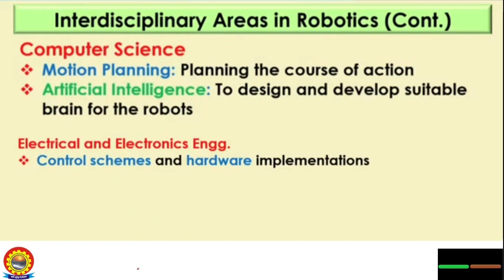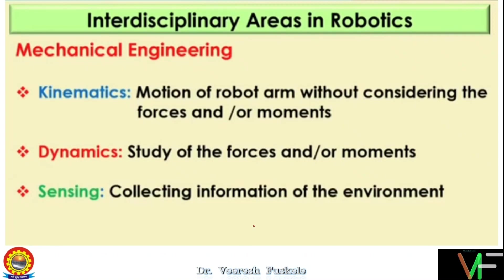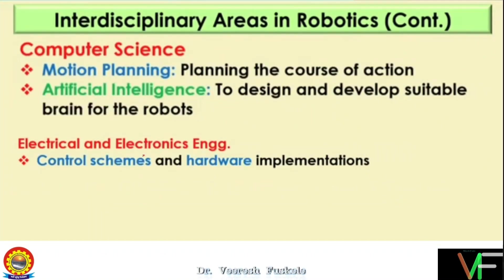Sensing is the third part of mechanical engineering, which involves collecting information from the environment with the help of sensors — internal sensors and external sensors. Though sensing is a part of electrical and electronics also, robots were previously driven mainly by mechanical means like gears, belt drives, and chains, which is why sensing was kept in the mechanical portion. But nowadays, most sensors we use are electrical or electronic.